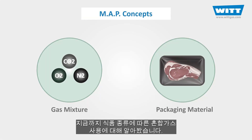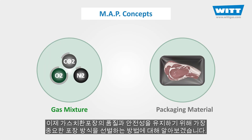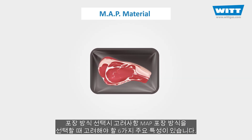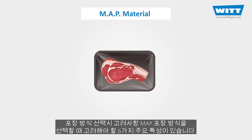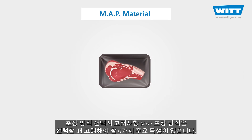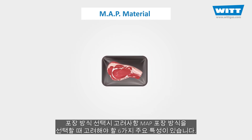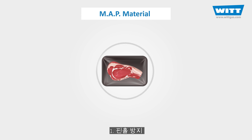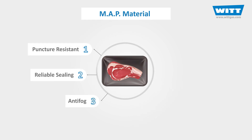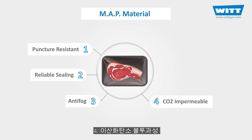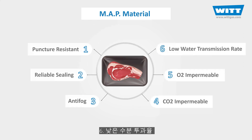Now that we're familiar with the gas mixture concepts, let's see how we select the best packaging material, as it's essential to maintain the quality and safety of MAP foods. There are six main characteristics to consider when selecting packaging material for modified atmosphere packed foods: resistance to puncture, sealing reliability, anti-fogging properties, carbon dioxide impermeability, oxygen impermeability, and low water transmission rate.